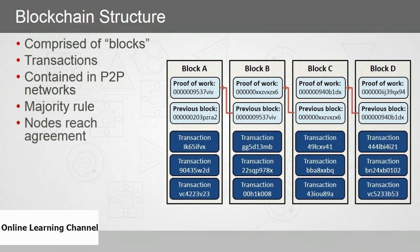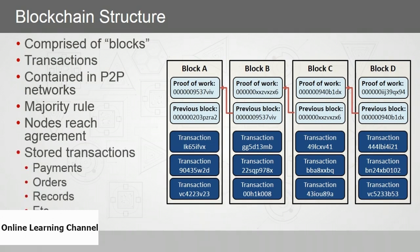In transaction processing, all the nodes — or a majority of them — reach agreement. When agreement is reached, the transaction, a block, is stored to the database, the blockchain. Common transactions used in blockchains include payments, orders, and data records.